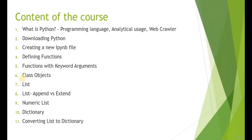A list is basically like an array in C++ programming language, and we're going to talk about the append versus extend differences in a Python list. We'll then go into more detail about numeric lists - what we can do with them and how to perform numeric operators. Lastly, we're going to talk about the data dictionary structure in Python.